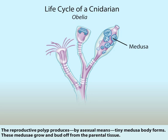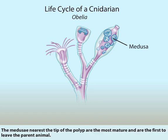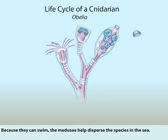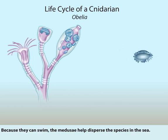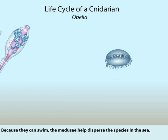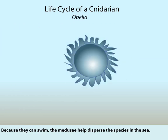These Medusae grow and bud off from the parental tissue. The Medusae nearest the tip of the polyp are the most mature and are the first to leave the parent animal. Because they can swim, the Medusae help disperse the species in the sea.